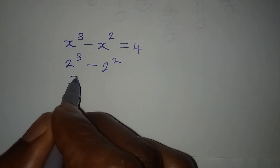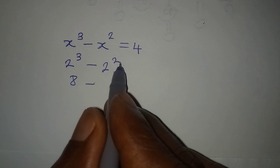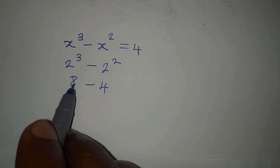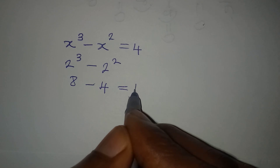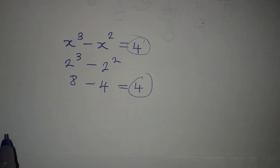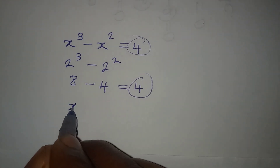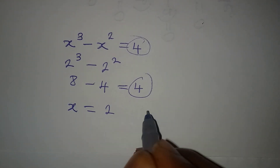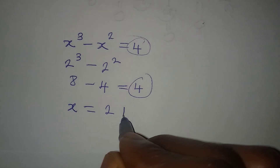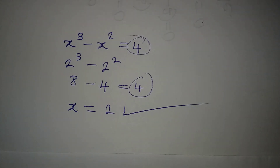2 to the power of 3 is 8, and 2 to the power of 2 is 4. So 8 minus 4 equals 4, which is exactly what we had on the right-hand side. This confirms that x equal to 2 is the only real solution to this equation. Thank you for watching.